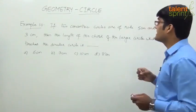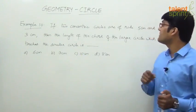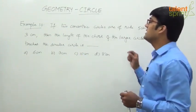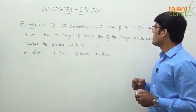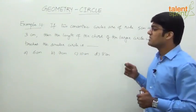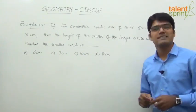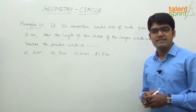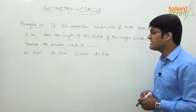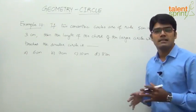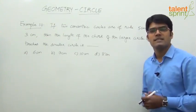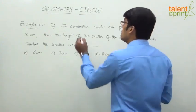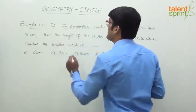If two concentric circles are of radii 5 centimeters and 3 centimeters, then the length of the chord of the larger circle which touches the smaller circle is — and the options are 6 centimeters, 7 centimeters, 10 centimeters, and 8 centimeters. Interesting one here — we have got two concentric circles.